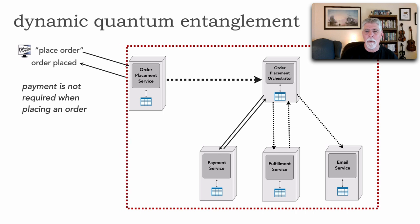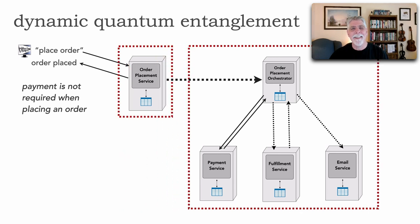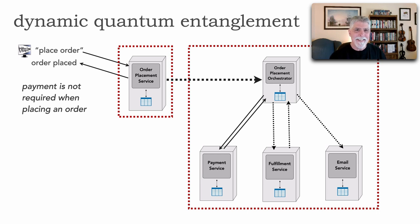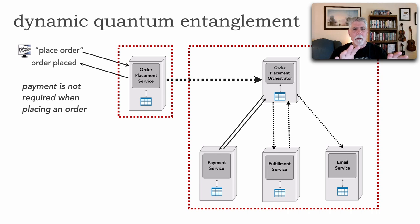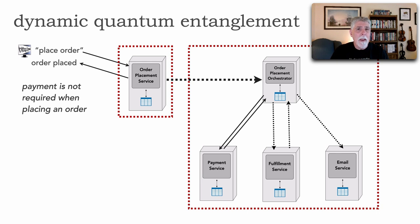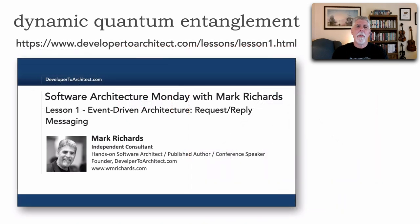However, if we choose asynchronous communication — for example, messaging — this detangles those quanta and they now form two separate architectural quanta. The placement orchestrator doesn't need to be highly available or responsive; I'm no longer dependent on its operations for my own operations. This is an extremely important concept when choosing synchronous versus asynchronous calls. Look at your system, identify what those architectural quanta are, and examine the calls between them — synchronous calls bring up those same architecture characteristics across boundaries.